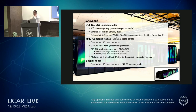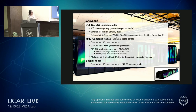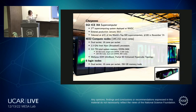More specs: Cheyenne is dual socket with 18 cores per socket, running 2.3 GHz Intel Xeon Broadwell processors, with 313 terabytes of total DDR4 system memory. The interconnect is a Mellanox EDR InfiniBand fabric connecting the nodes. There are six login nodes for Cheyenne, each dual socket with 18 cores — however, login nodes are not meant for computing.